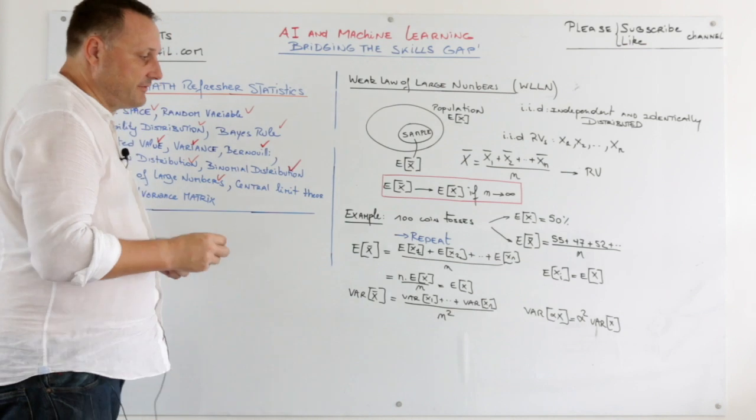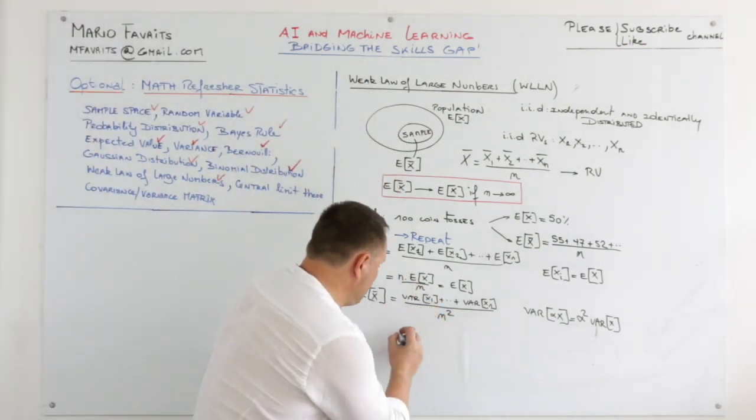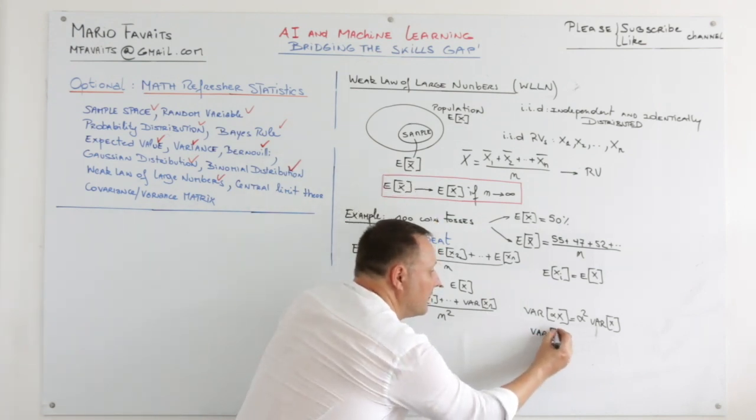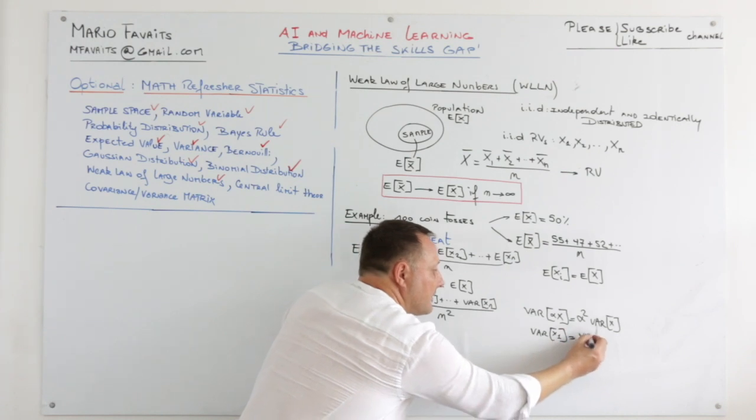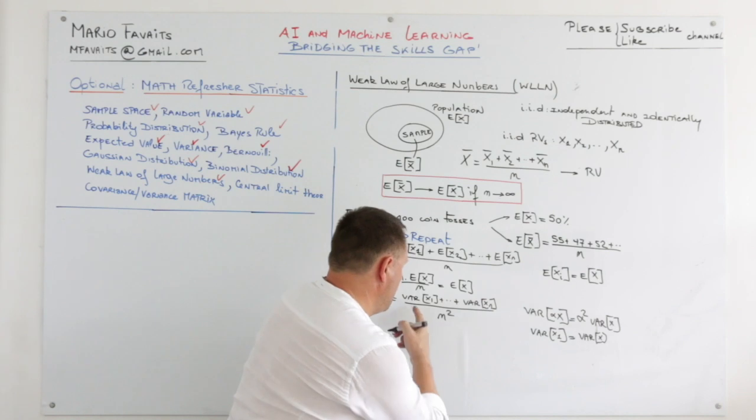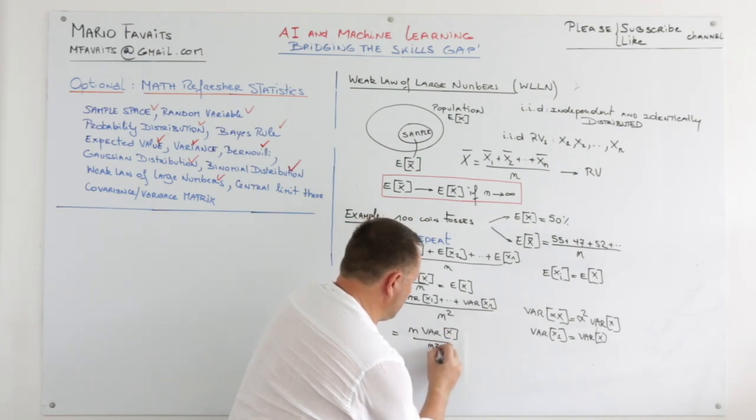We've seen that just a couple videos ago. So now we also know that the variance of X1 is the same as the variance of X. So we have n times the variance of X divided by n squared.